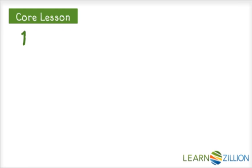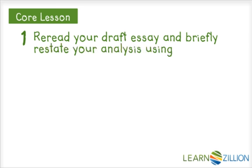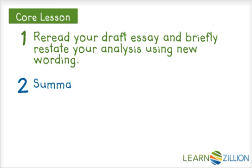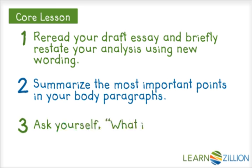To write a conclusion for an explanatory essay, first re-read your draft essay and briefly restate your analysis using new wording. Next, summarize the most important points in the five paragraphs. And finally, ask yourself: what implications do I want my reader to remember?